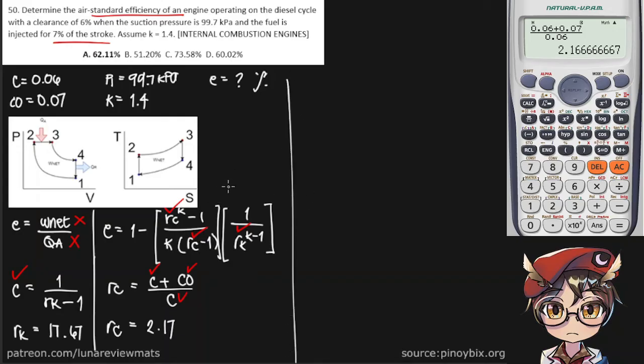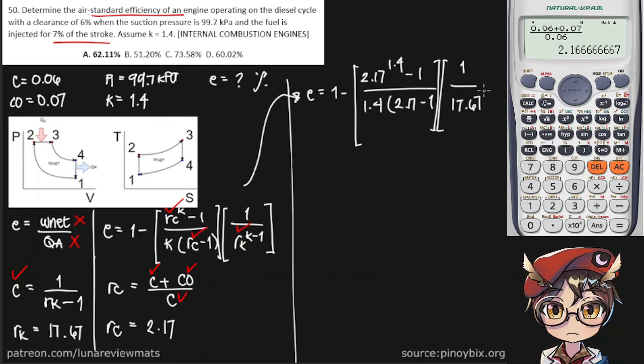So now we can simply start putting our values in. E is equal to 1 minus, where R sub C is 2.17, K is 1.4, K is 1.4 again, sub C minus 1, and 1 over R sub K 17.67 raised to K minus 1. Now we put that in our calculator.